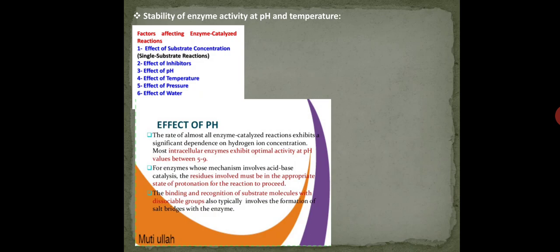Now effect of pH: how pH will affect the enzyme activity or how the pH is related to the stability of the enzyme activity. Now see, not certain, we will say different enzymes are active at different pH. A specific enzyme - it's not like all enzymes are active at the same pH. Different enzymes show different activity at different pH. So the rate of almost all enzyme catalyzed reactions exhibit a significant dependence on H plus ion concentration.